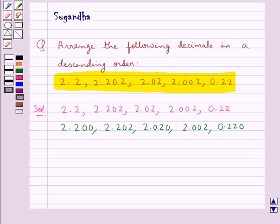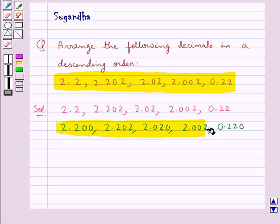Now we compare the whole number part of these decimal numbers. The first four decimal numbers have the same whole number part, that is 2. But the last decimal number, 0.220, has the whole number part as 0, and so it would be the smallest of all the decimals.